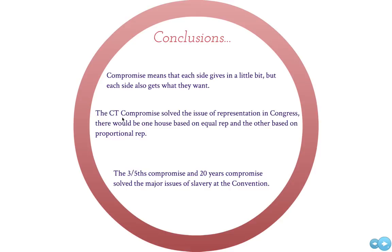On the two slavery issues: the Three-Fifths Compromise allowed states to count three-fifths of their slaves in their total state populations, keeping the balance of power between the North and the South. And finally, the Slave Trade Compromise — or 20 Years Compromise — agreed that the slave trade would end, but not for 20 years, giving the South time to adjust to this major change in their economy.